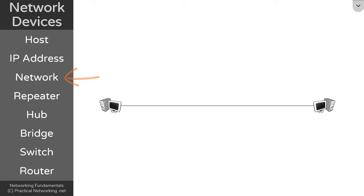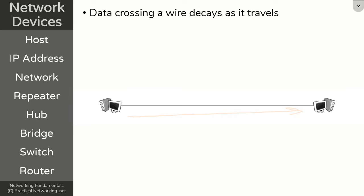In the last video, we unpacked the idea of a network. We identified that a network is created any time you connect two computers to each other using a wire. One thing to understand about sending data across a wire is that it decays as it travels greater and greater distances. If the two computers you're connecting are in the same room, then you don't really have to worry about it — the decay will still occur, but the signal will still get through and connectivity between these hosts is still attained.